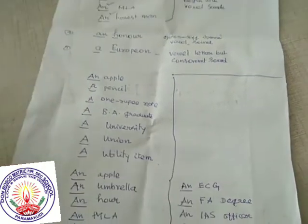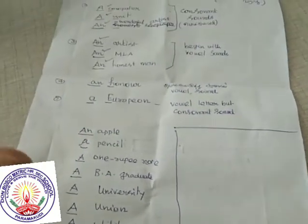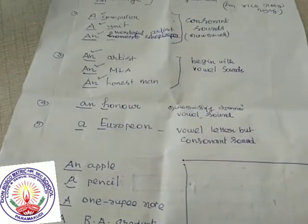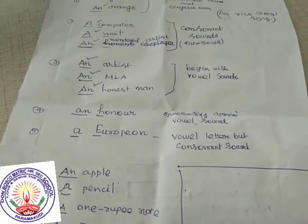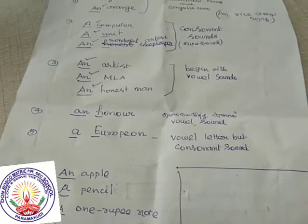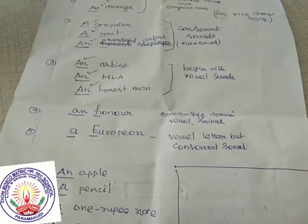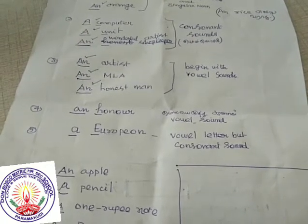Vowel sound — A, E, I, O, U. These are vowels. You know, you have already learnt this in your earlier classes. Everybody knows these vowels.